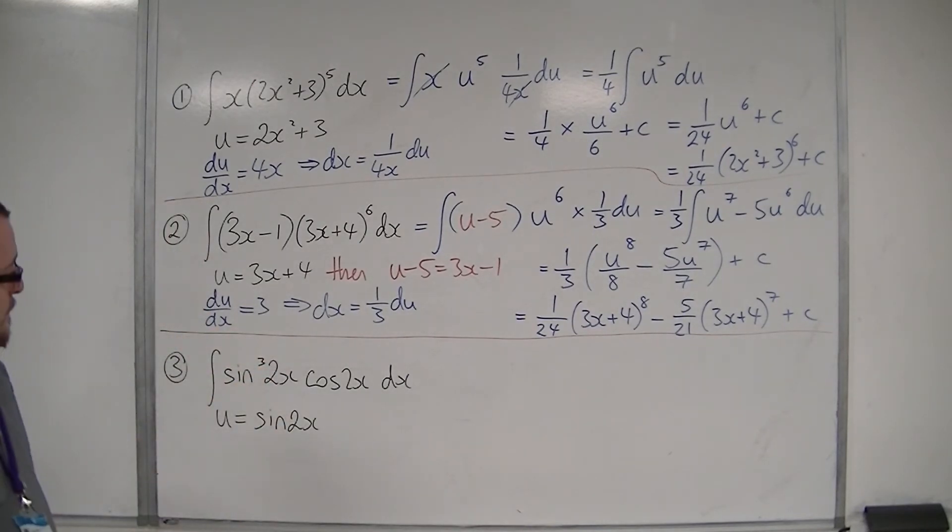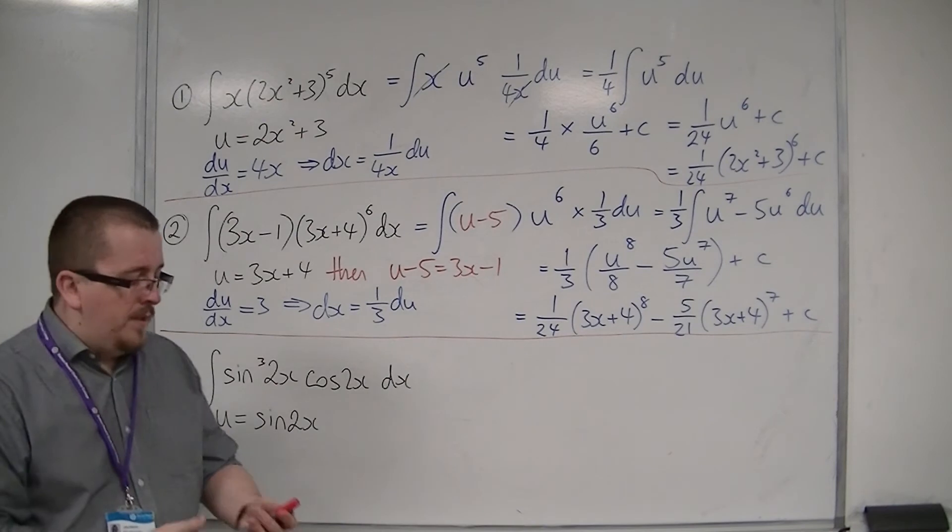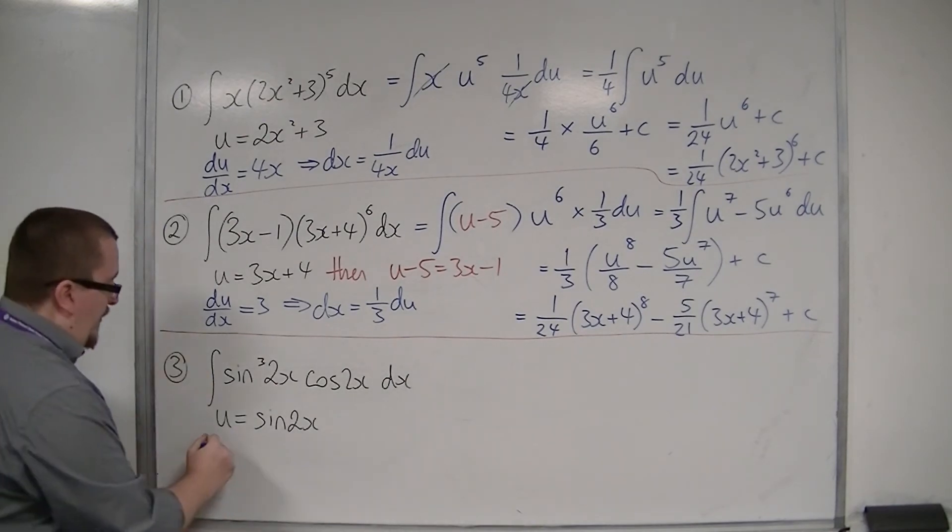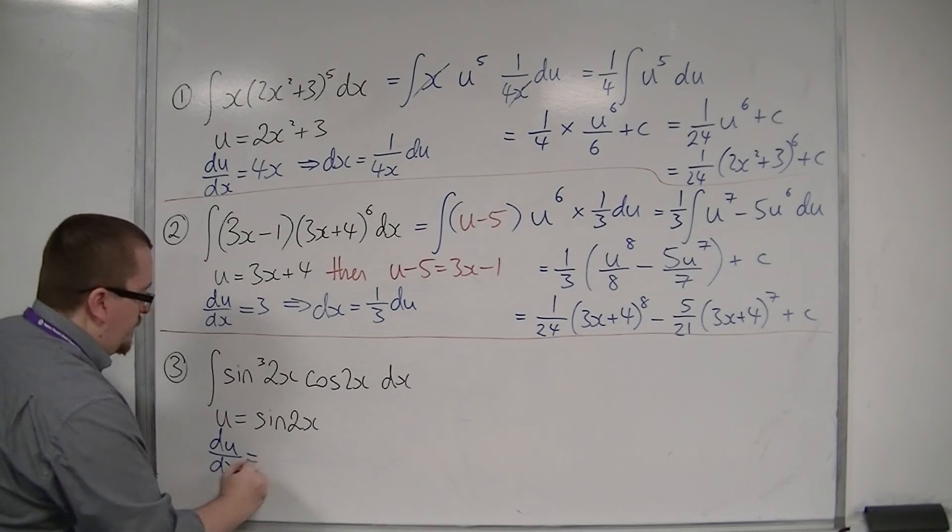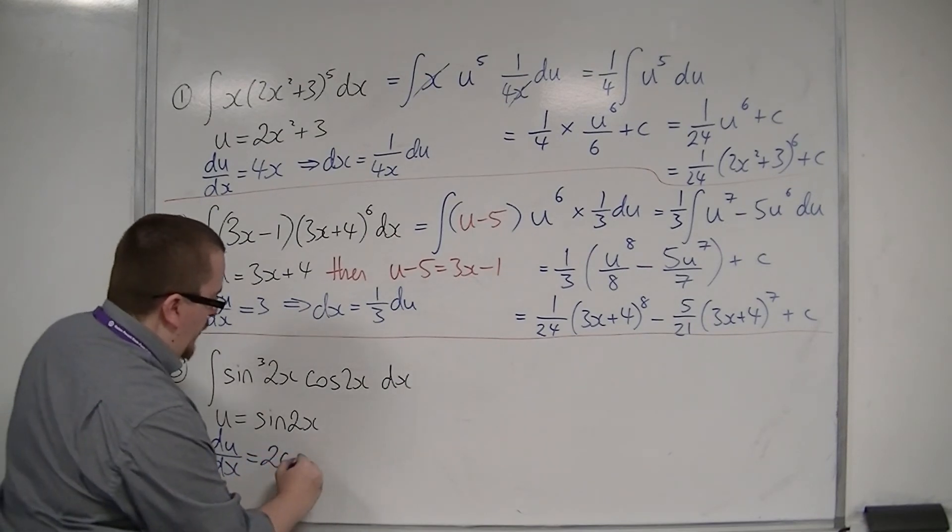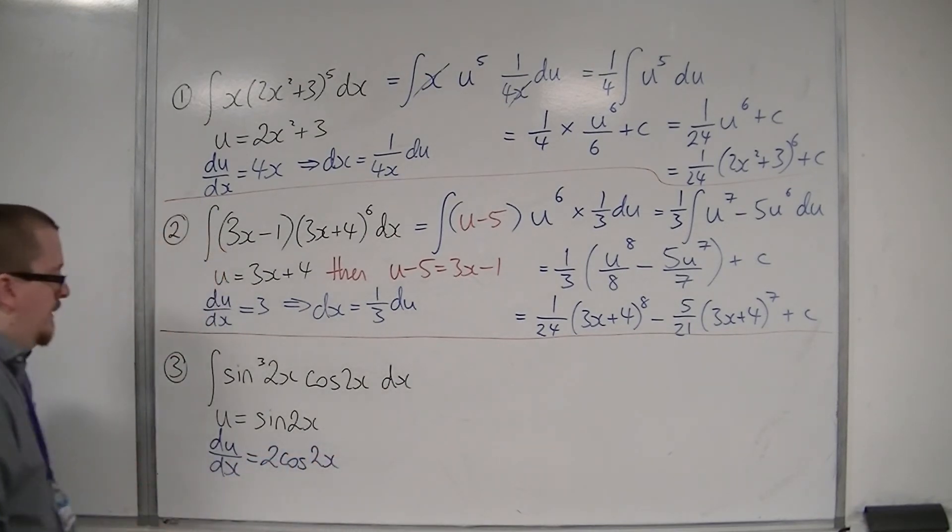Let's look at the third and final one. The integral sin³(2x)cos(2x) dx, where u is sin(2x). So same process each time, find du/dx. So that would be 2cos(2x).